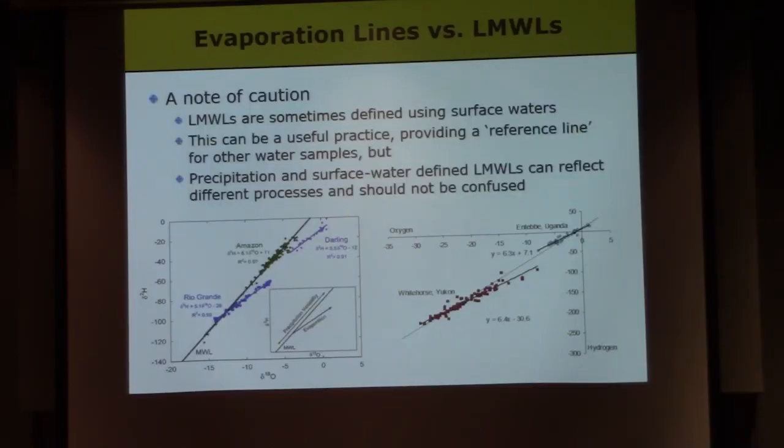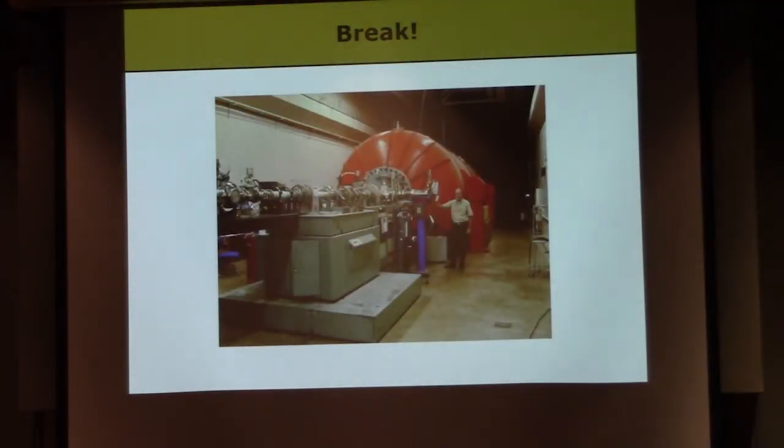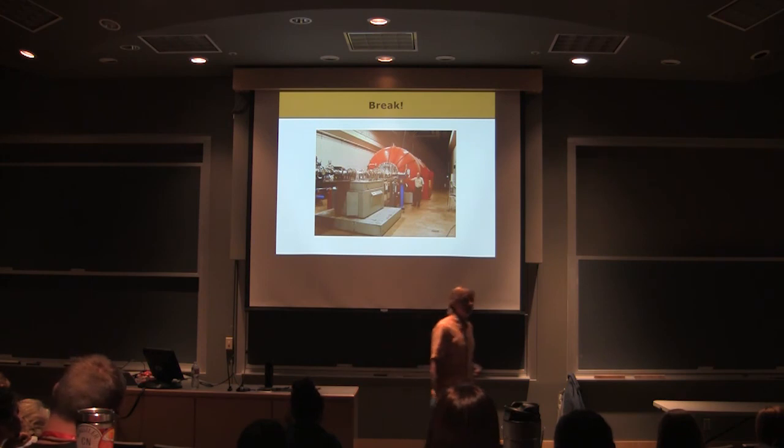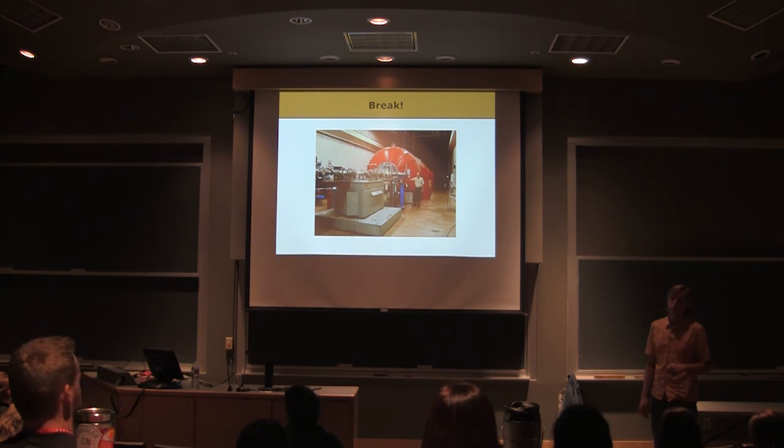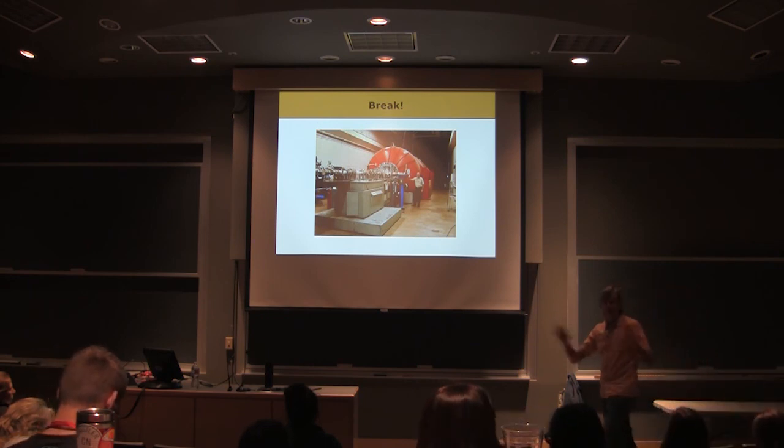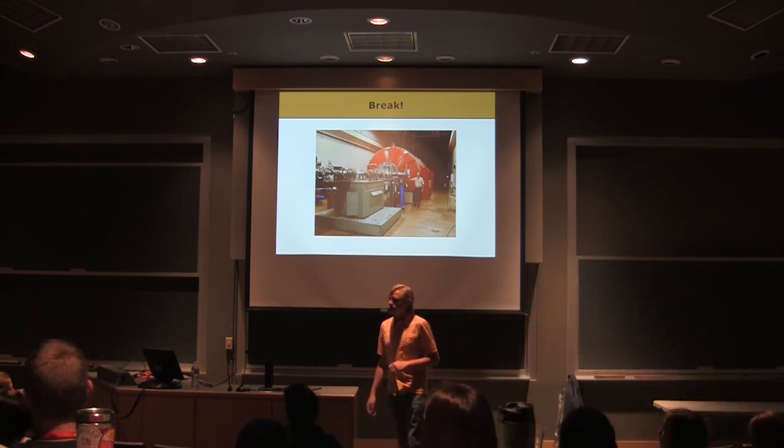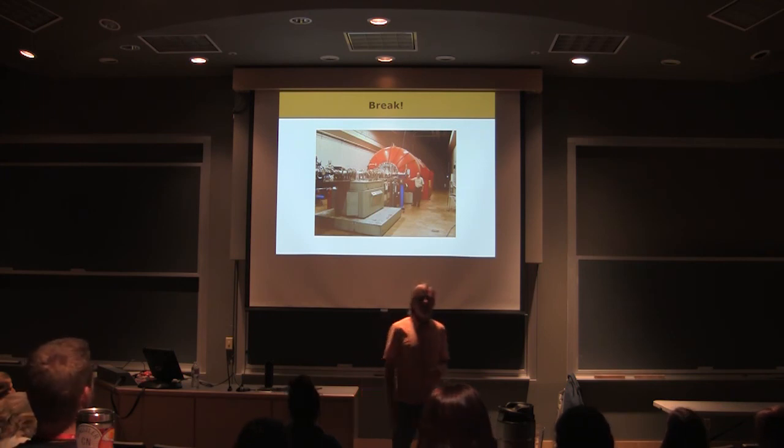So this is what I just said. Evaporation lines, local meteoric water lines, think about what they actually mean and what somebody's showing you and where the data's coming from. If you go and collect data, if you've got water isotope data, think about it. Think about what the processes are that are actually affecting that. This is a great big mass spectrometer, much cooler than the ones upstairs in some ways, but this is the prime facility at Purdue. There's a whole basement that's the size of a football field that's filled with mass spectrometers. Questions about the evaporation process, meteoric water lines, stuff we just covered?